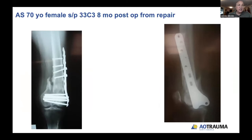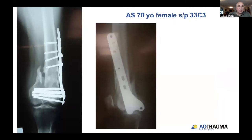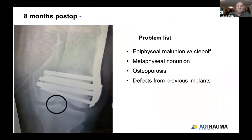Starting with a case: a 70-year-old woman who presents status post a complex distal femur fracture, about eight months status post repair. Her original fixation was a hybrid fixation — non-locking screws proximally, locking screws distally, no lag fixation at the joint, and a bridging construct. This went on to fail, with hardware failure, a non-union at the metadiaphyseal junction, and malunion at the articular surface.